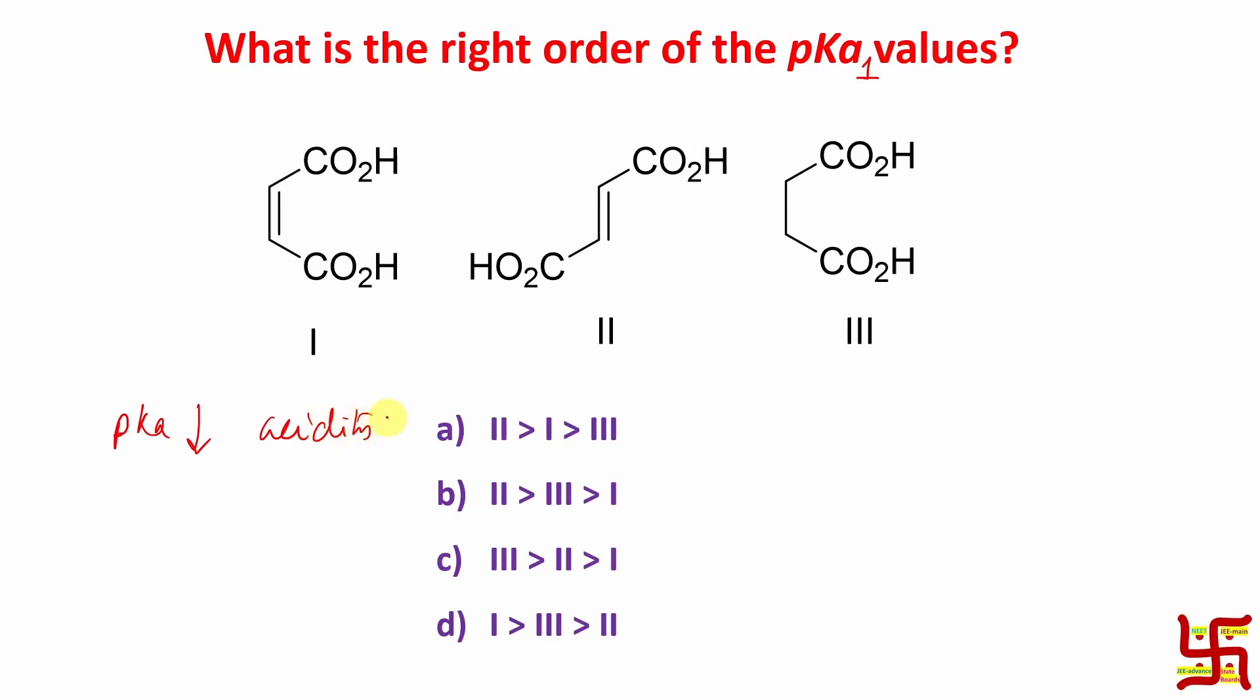So more accurately the question means what is the right order of acidity values. So pKa from top if you see from greater than means the weak acid to the strong acid. Now here three options are provided.